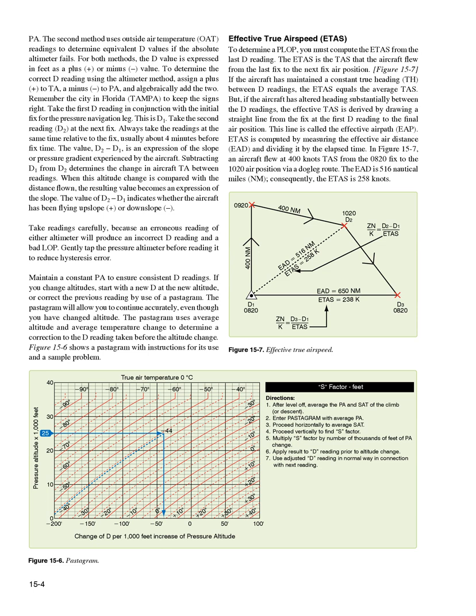The value D2-D1 is an expression of the slope or pressure gradient experienced by the aircraft. Subtracting D1 from D2 determines the change in aircraft TA between readings. When this altitude change is compared with the distance flown, the resulting value becomes an expression of the slope. The value of D2-D1 indicates whether the aircraft has been flying upslope (plus) or downslope. Take readings carefully, because an erroneous reading of either altimeter will produce an incorrect D reading and a bad LOP. Gently tap the pressure altimeter before reading it to reduce hysteresis error.